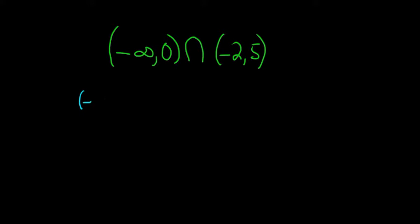First we'll graph the set negative infinity to 0. To graph the set, we start by drawing a number line. Then we'll plot the 0.